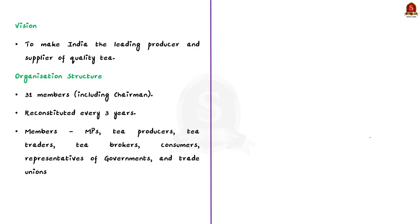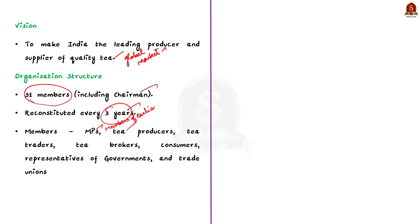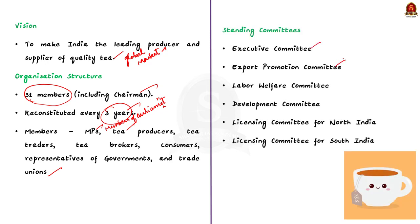The vision of the Tea Board is to make India the leading producer and supplier of quality tea in the global market. The present Tea Board consists of 31 members including the chairman, and is reconstituted every three years. Members include members of parliament, tea producers, tea traders, tea brokers, consumers, and representatives of governments from principal tea producing states and trade unions. There are six standing committees: executive committee, export promotion committee, labor welfare committee, development committee, and licensing committees for North India and South India.